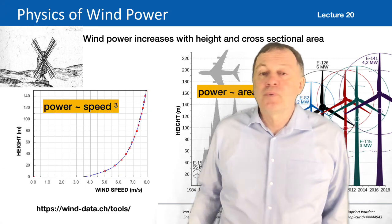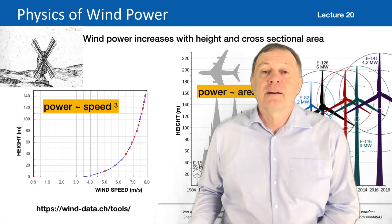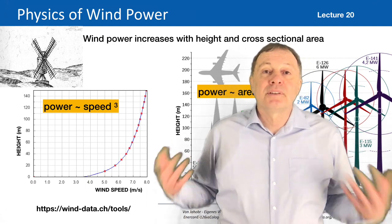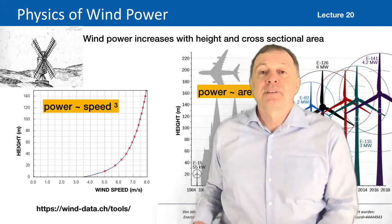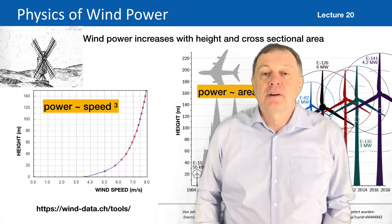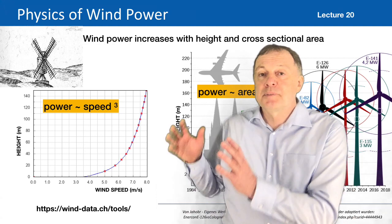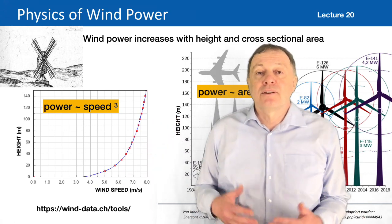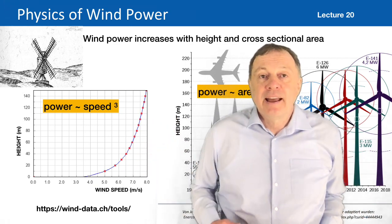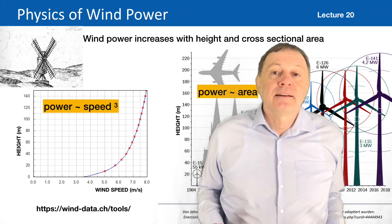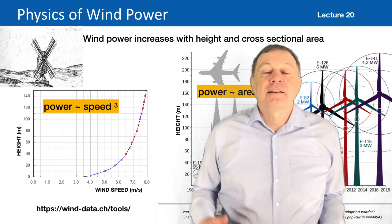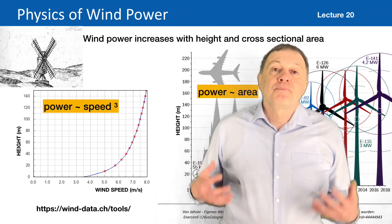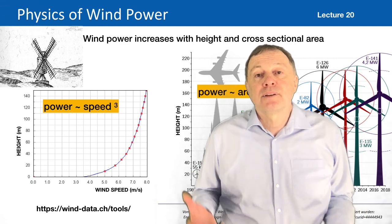Power is proportional to speed to the third power. If one quantity is proportional to another, doubling one doubles the other. Speed to the third power means speed times speed times speed. So if you double the speed, you have a factor of 2×2×2 = 8. That means if the wind speed is twice as big, the wind power is eight times as big — not linear, but to the third power.